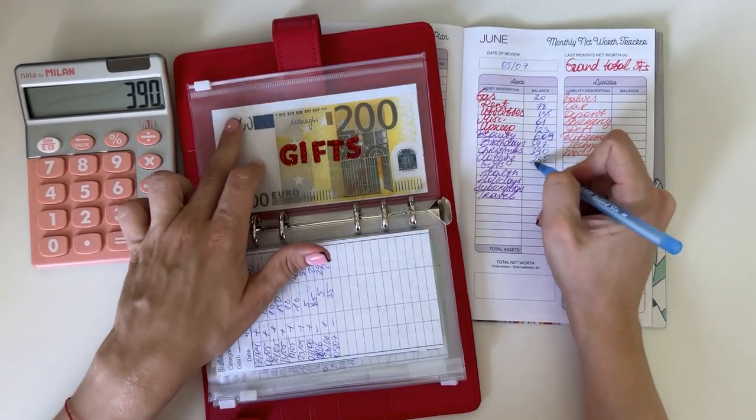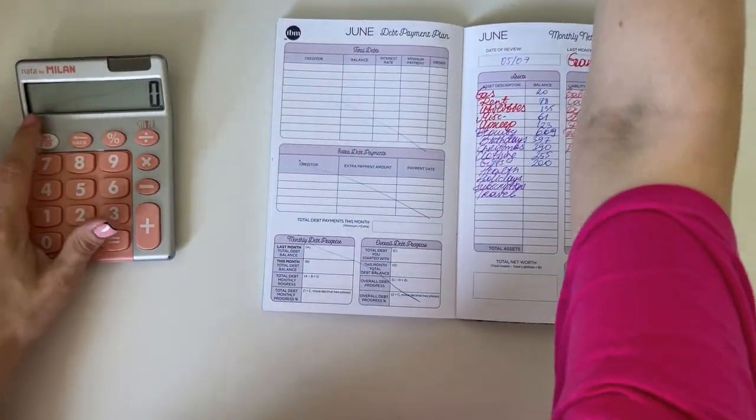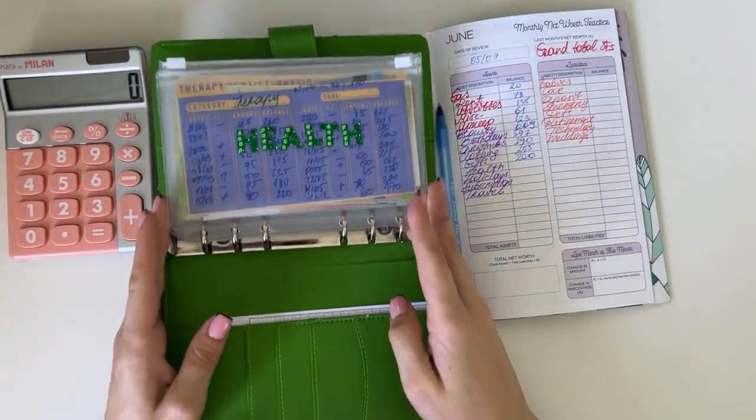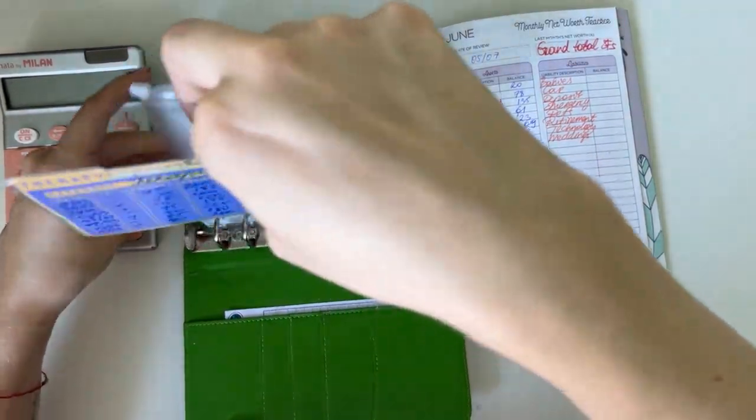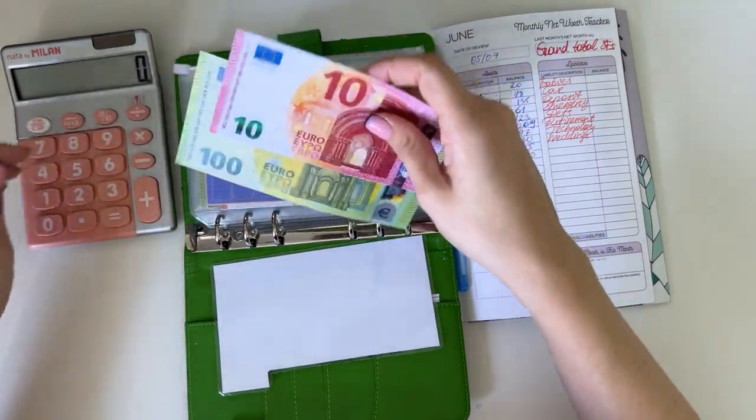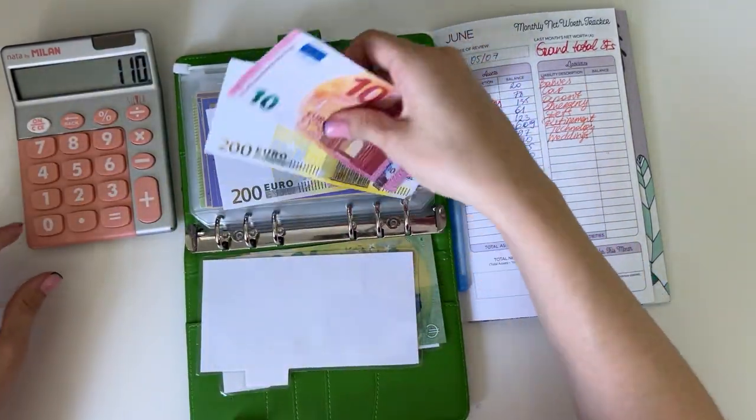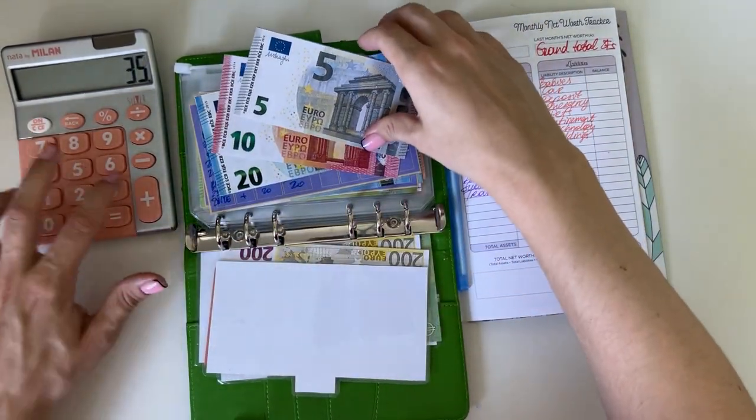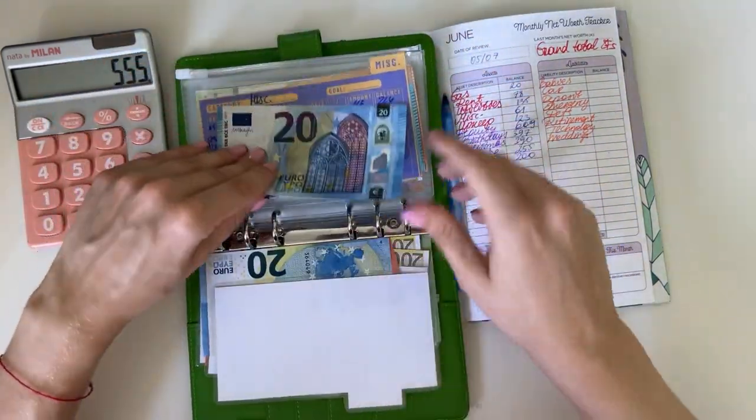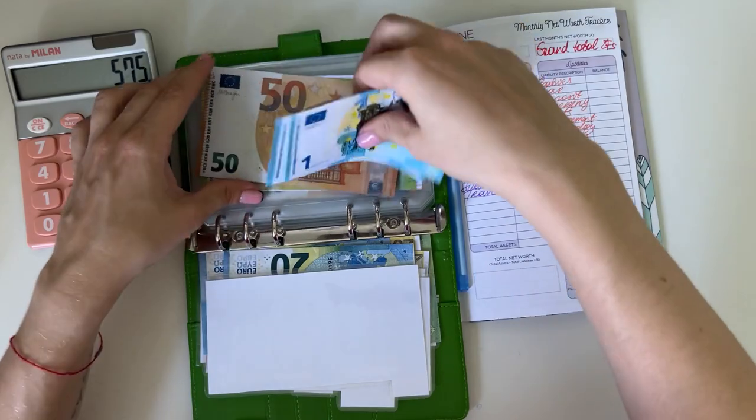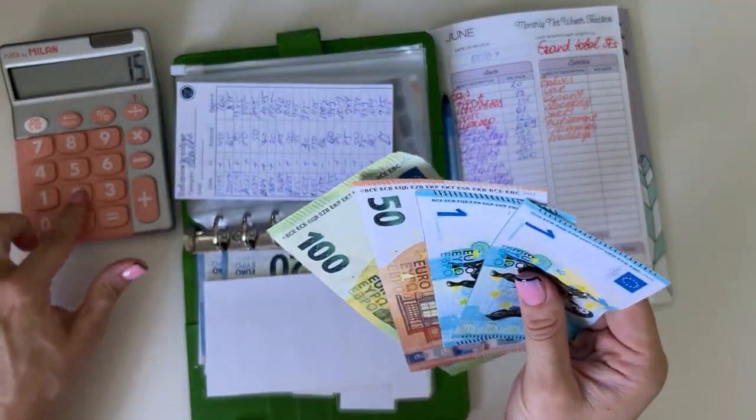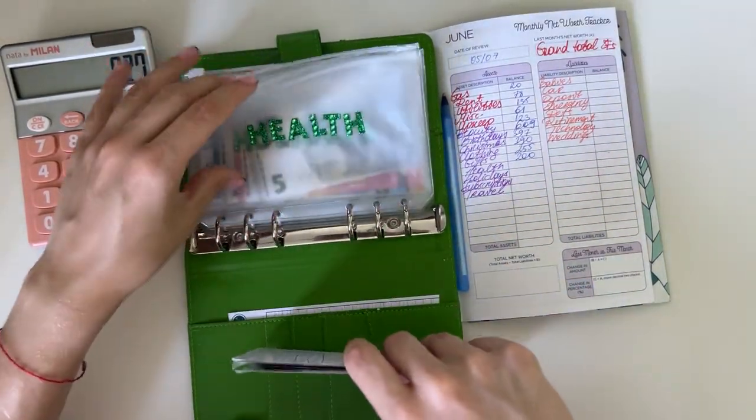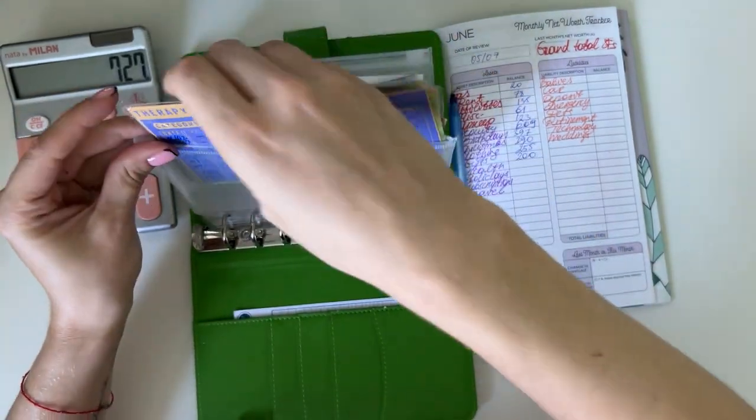Gifts has 200. Our other short-term sinking funds binder is our Johnny Cash, our green binder. We're starting with health. Therapy has 110, dentist has 200, physio has 35, medicine has a 20, and miscellaneous has 152. That's 727, exactly what we have on here.